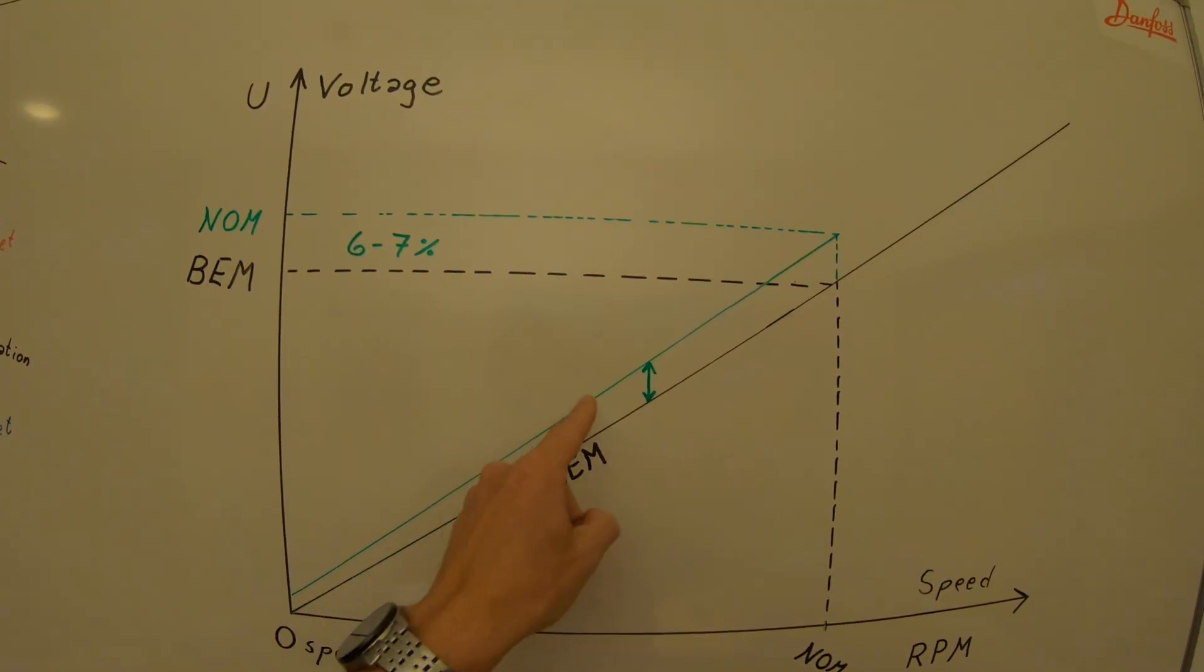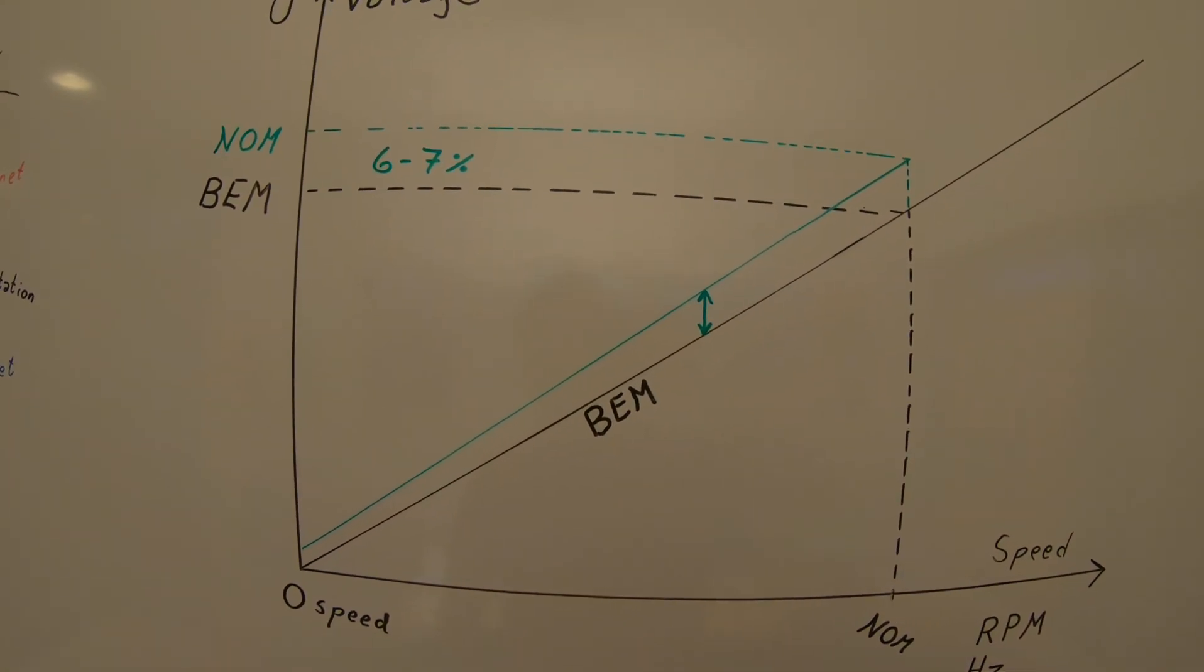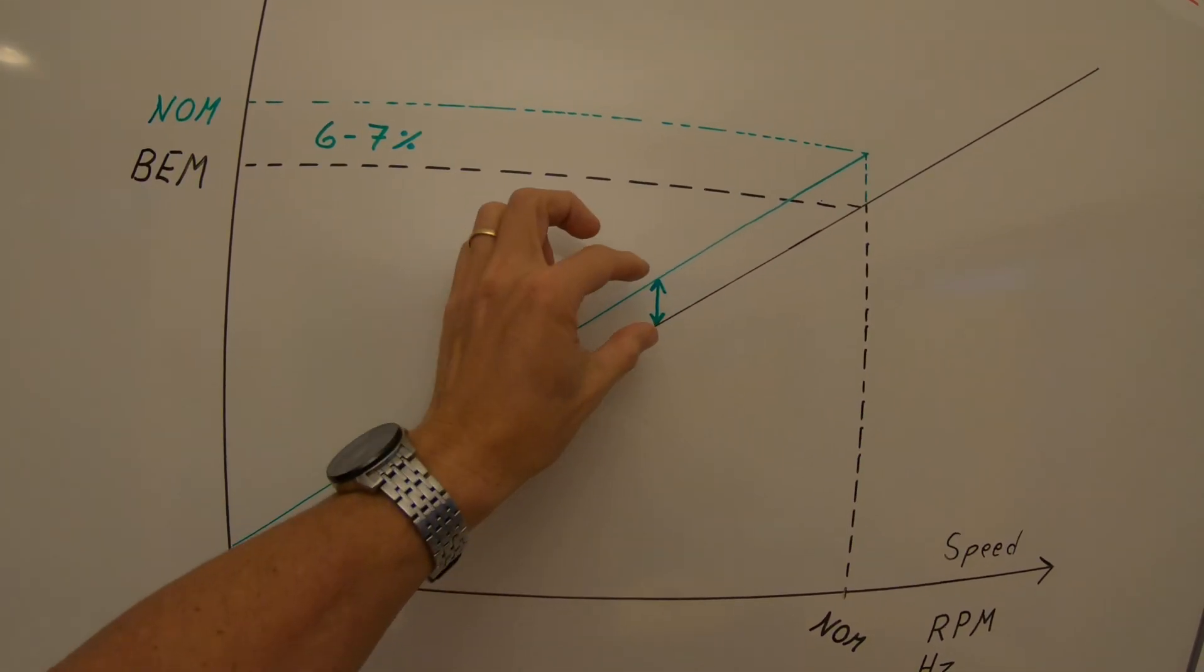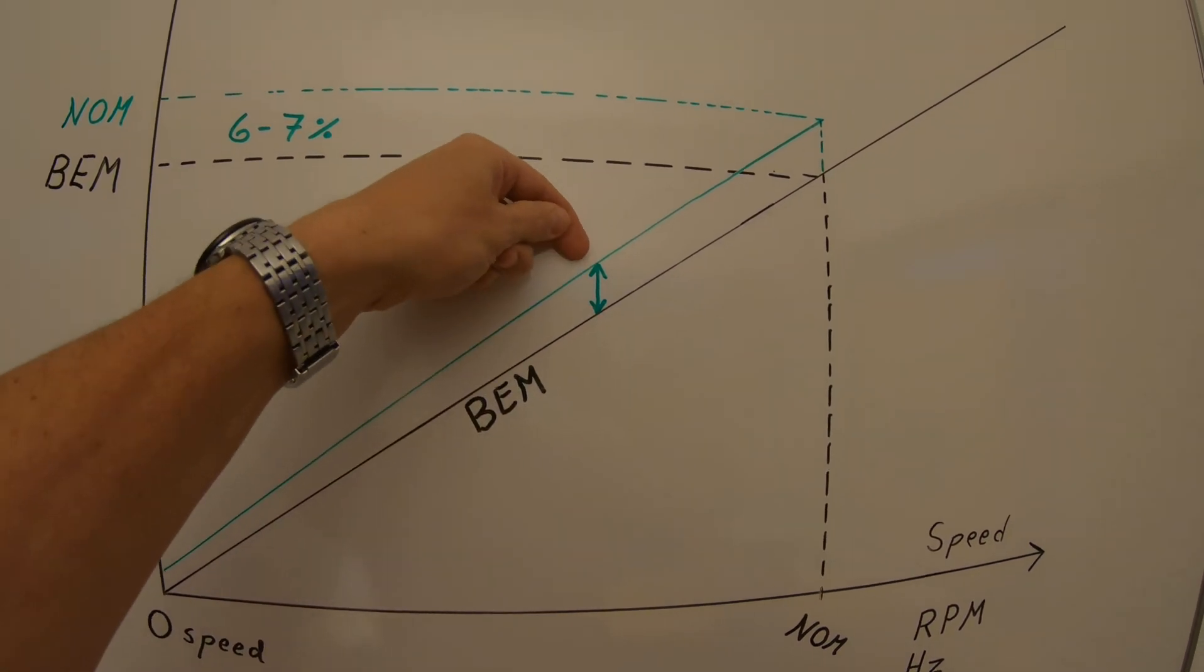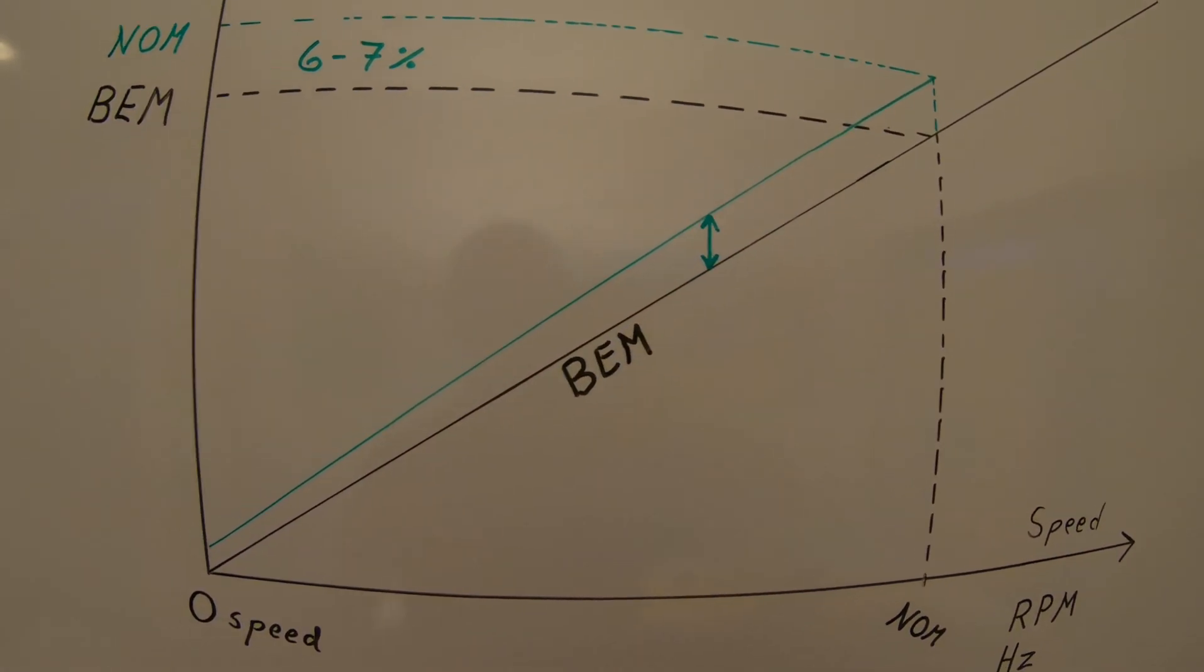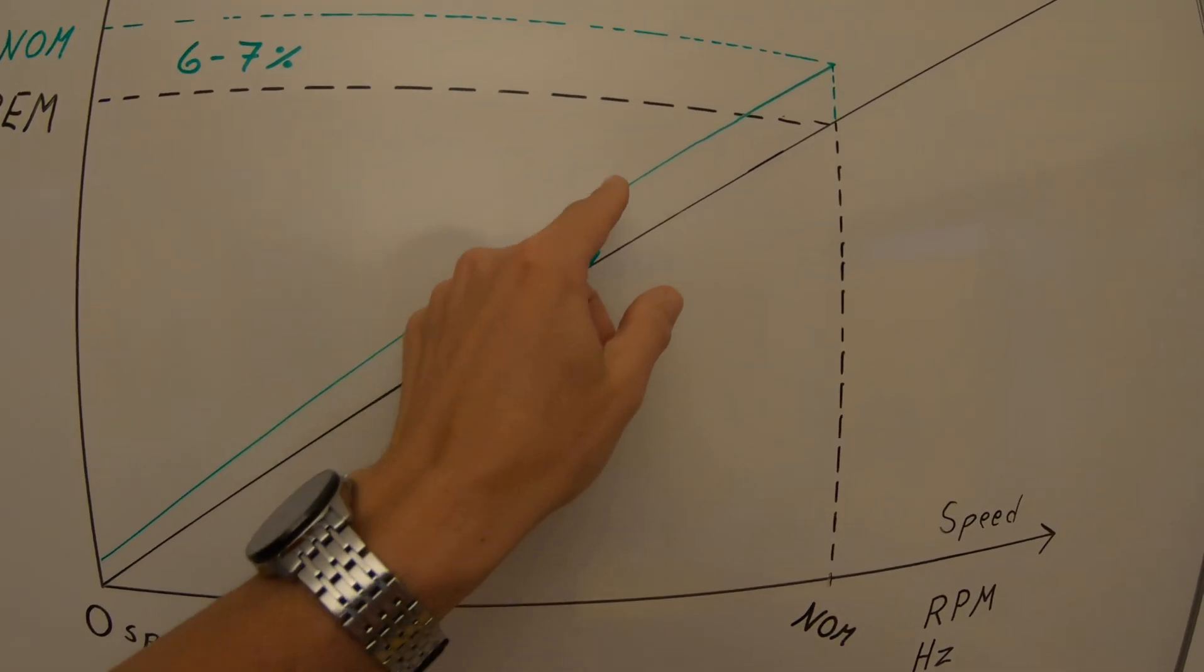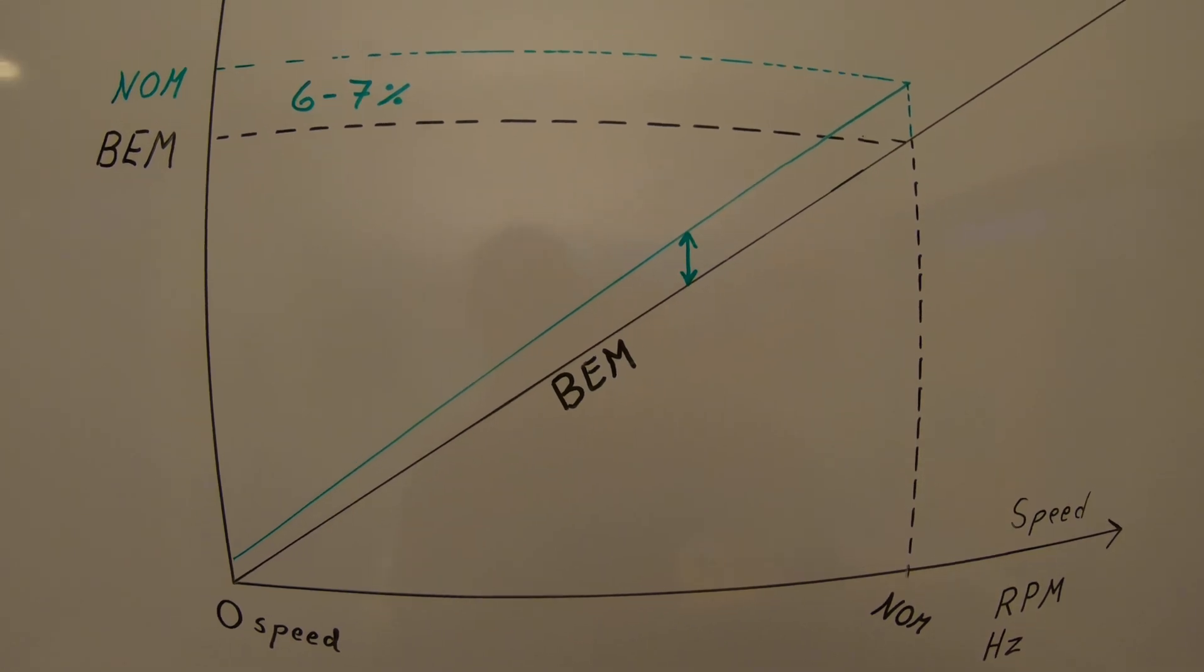The green curve here is what the motor vendor calls the motor nominal. This is the recommended voltage from the frequency converter to control the motor. The voltage difference between the output from the drive and the motor back EMF, this is what will drive the current and this is what the motor vendor tells us to push voltage to the motor to get the nominal performance of the motor.